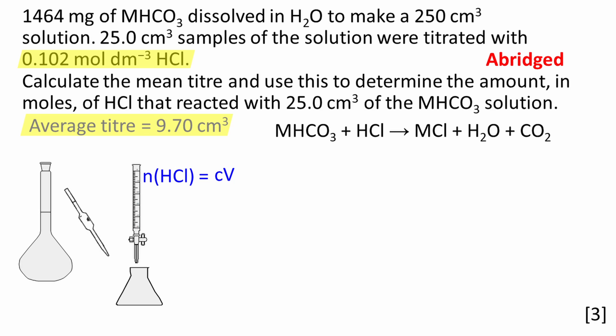The amount of HCl in moles is given by concentration multiplied by volume. We must be consistent with units. Convert the volume of HCl from cm³ to dm³ by dividing by 1,000. I have shown this using times 10⁻³. The amount of HCl that reacted with the MHCO3 solution is equal to 9.894 × 10⁻⁴ moles. I have not rounded this result because we will use it in future calculations.